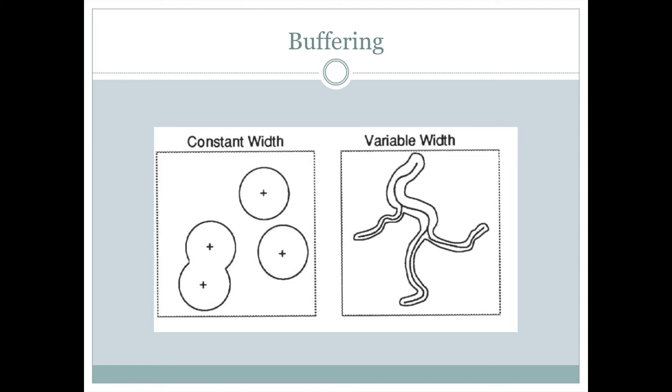When we draw a buffer, all of the buffers on our map can have the same width. That would be a constant width buffer. Or we might vary the width of the buffer based on some feature or some attribute in the attribute table that we want to use as the basis for our buffer, and that would make a variable width buffer.